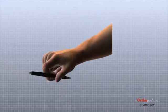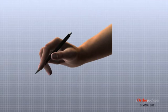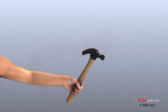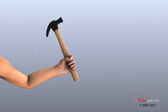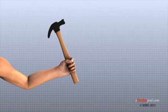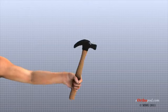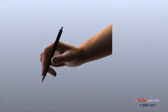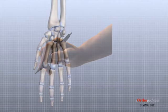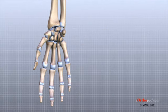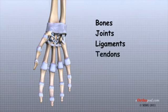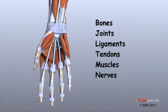Few structures of the human anatomy are as unique as the hand. The hand needs to be mobile in order to position the fingers and thumb. The hand must have adequate strength to grip objects firmly, but must also be coordinated to perform fine motor tasks with precision. The important structures of the hand can be divided into several categories. These include bones, joints, ligaments, tendons, muscles, nerves, and blood vessels.